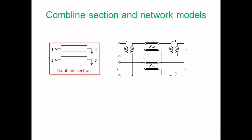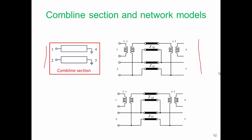Let's continue on and look at our comb line structure. Here is our comb line section on the left. Here is the equivalent circuit for our coupled lines. And here's the equivalent circuit again. Now we see in the comb line circuit we have two ports, ports four and three, that are short circuited.